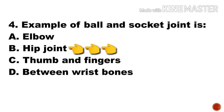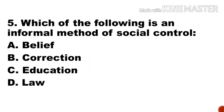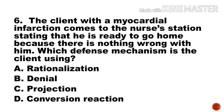Next question: Which of the following is an informal method of social control? a) belief, b) correction, c) education, d) law. Option c, education, is the right answer.